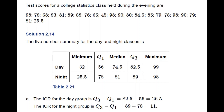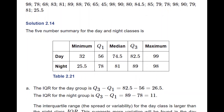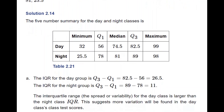The interquartile range is different for the two classes, and it tells us about the variability in the data set. There is definitely more variation in the day class test scores because it has a larger IQR of 26.5 compared to the night class.